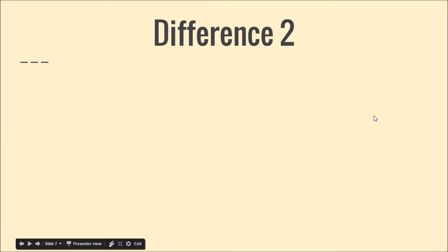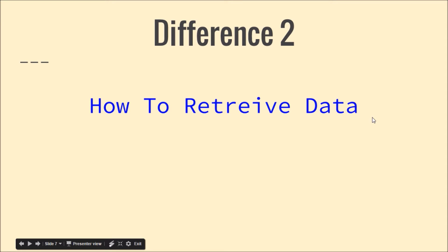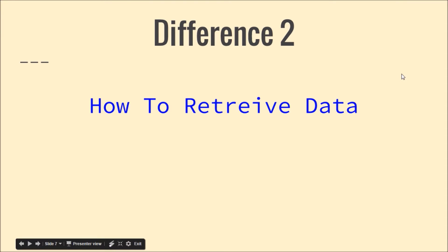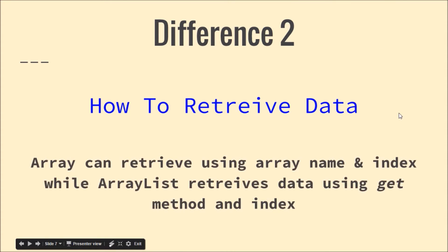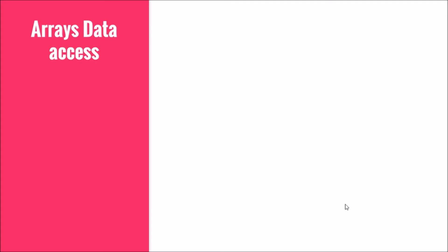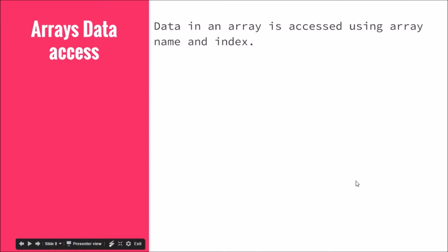The second difference is the manner in which you retrieve data. Arrays retrieve data using the array name and an index in square brackets. ArrayList retrieves data using the get method and an index. For arrays, you access a value like 'names[0]' — when it's on the left-hand side it stores, and on the right-hand side it retrieves.